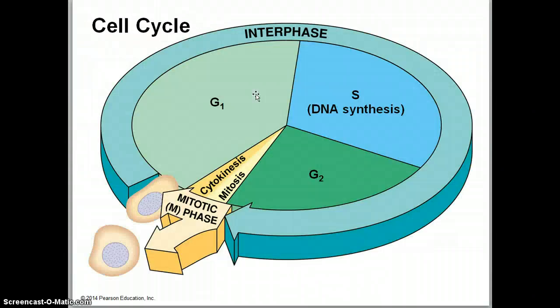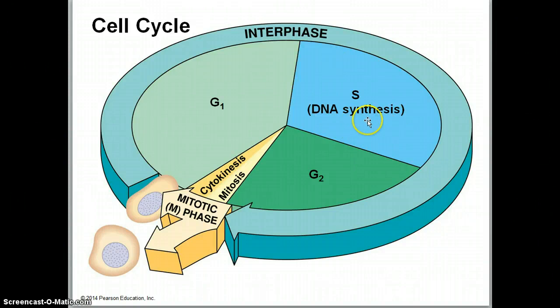What we're talking about today is the cell cycle — basically the life of the cell. It goes through two different parts: interphase and mitosis. Interphase is basically where the cell spends 90% of its time; it very rarely enters mitosis. Interphase can be broken down into G1, S, and G2. G1 stands for gap one.